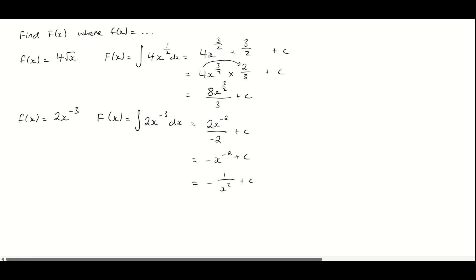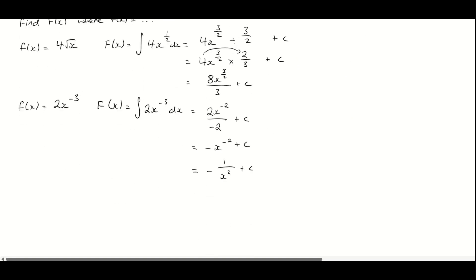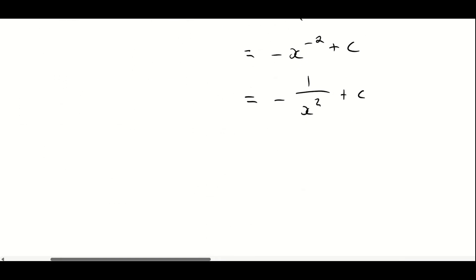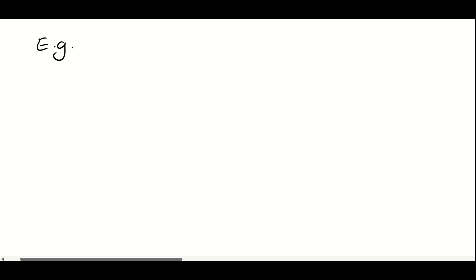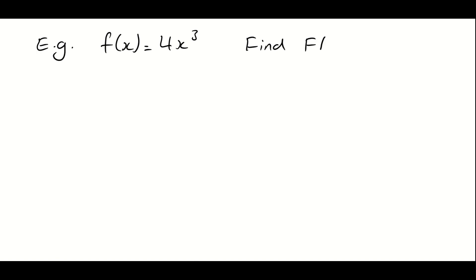There are a few examples reminding us what we did last video. Now I want to do something surrounding this plus C — surrounding this constant. If we're given a piece of information, there's a way we can actually find what that constant is. We are told that lowercase f of X is equal to 4X cubed, and we're asked to find capital F of X given the condition that capital F of 1 is equal to 2. This condition will help us find a value for C.